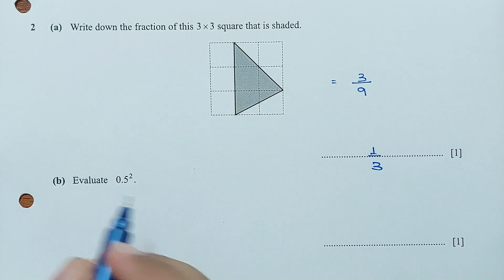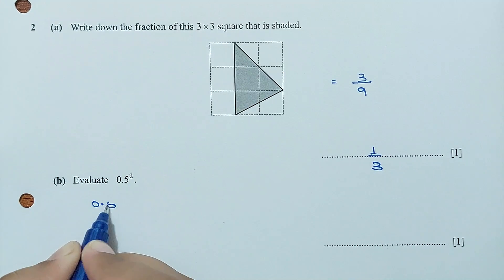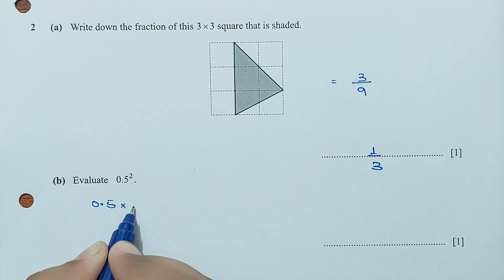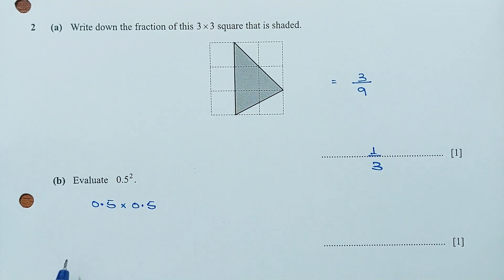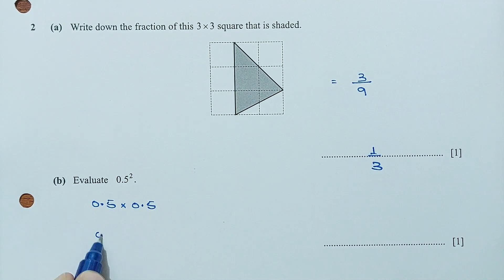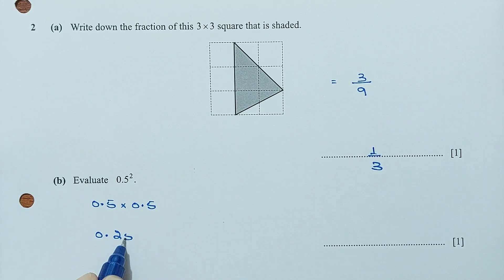Part B: evaluate 0.5 squared. This is 0.5 times 0.5. 5 times 5 is 25, so the answer is 0.25.